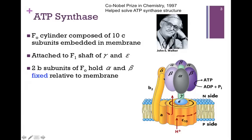Here's our F1 portion, composed of a trimer of dimers — that is alpha-beta, alpha-beta, alpha-beta subunits. FO and F1 are connected through this central shaft pictured here in green: our gamma shaft, more directly connected to an epsilon subunit. The important thing is that it's the FO portion that rotates. Because the gamma shaft is connected to the C cylinders, it rotates along with them. However, the alpha-beta subunits of F1 are fixed relative to the membrane because they're directly connected to the B subunits.